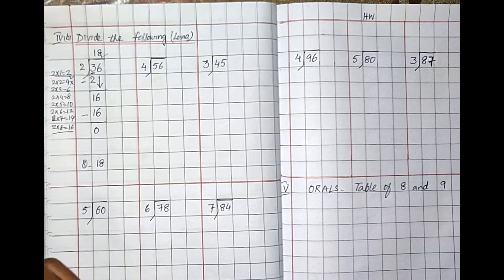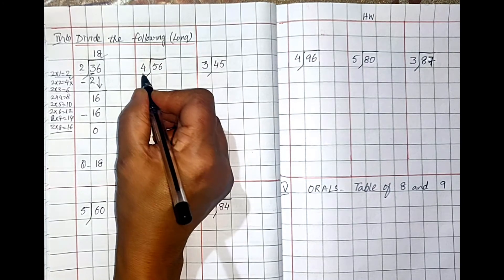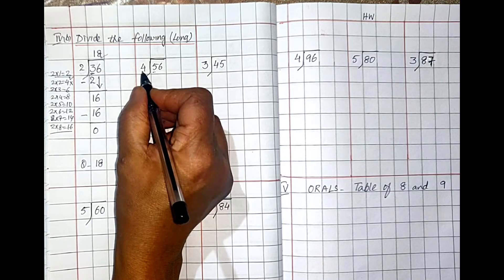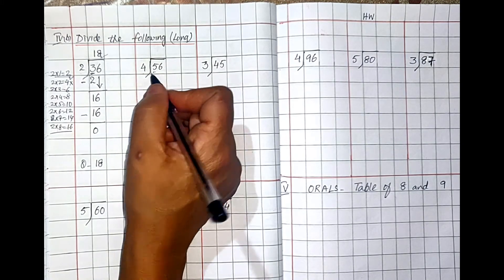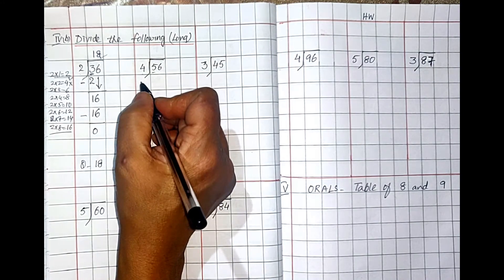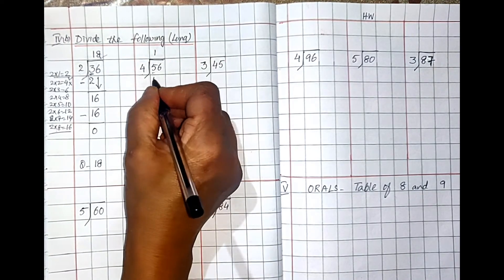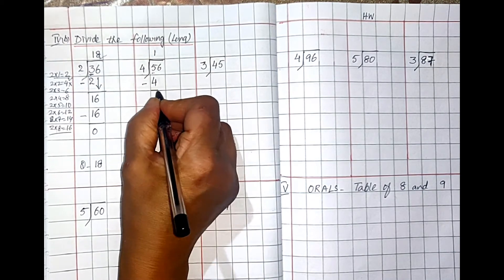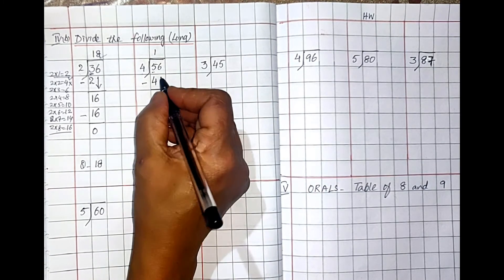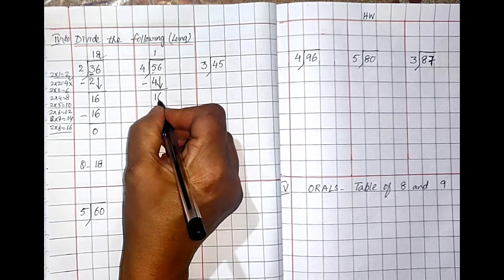Right, children. Like this you have to do it step by step. Now look here: 56 divided by 4. Check the first number — five is greater than four, so you have to solve it one by one. Read the table of four: four ones are four, four twos are eight. We cannot take eight, so take one time — four ones are four. Five minus four is one. The tens place is done.